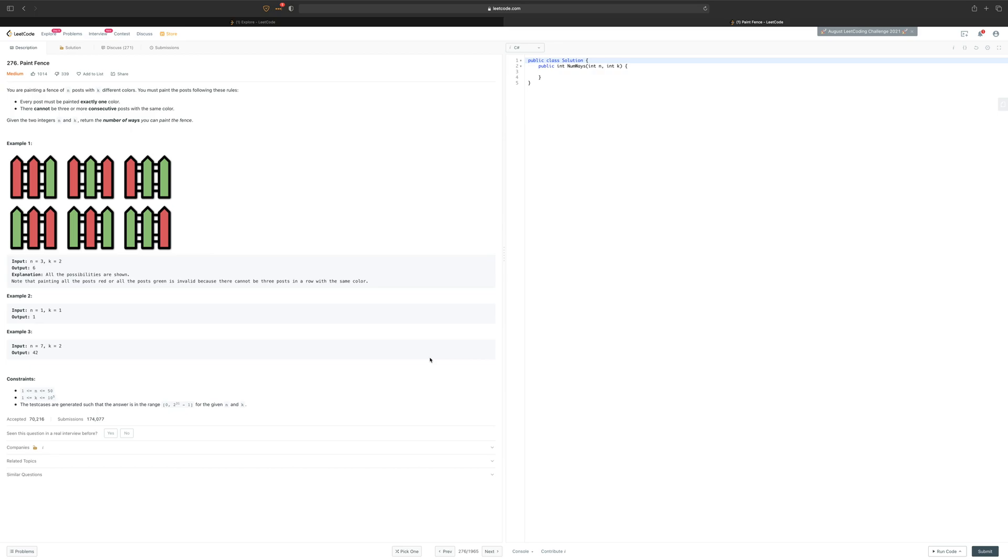There cannot be three or more consecutive posts with the same color. It simply means that you can have up to two fences next to each other with the same color.